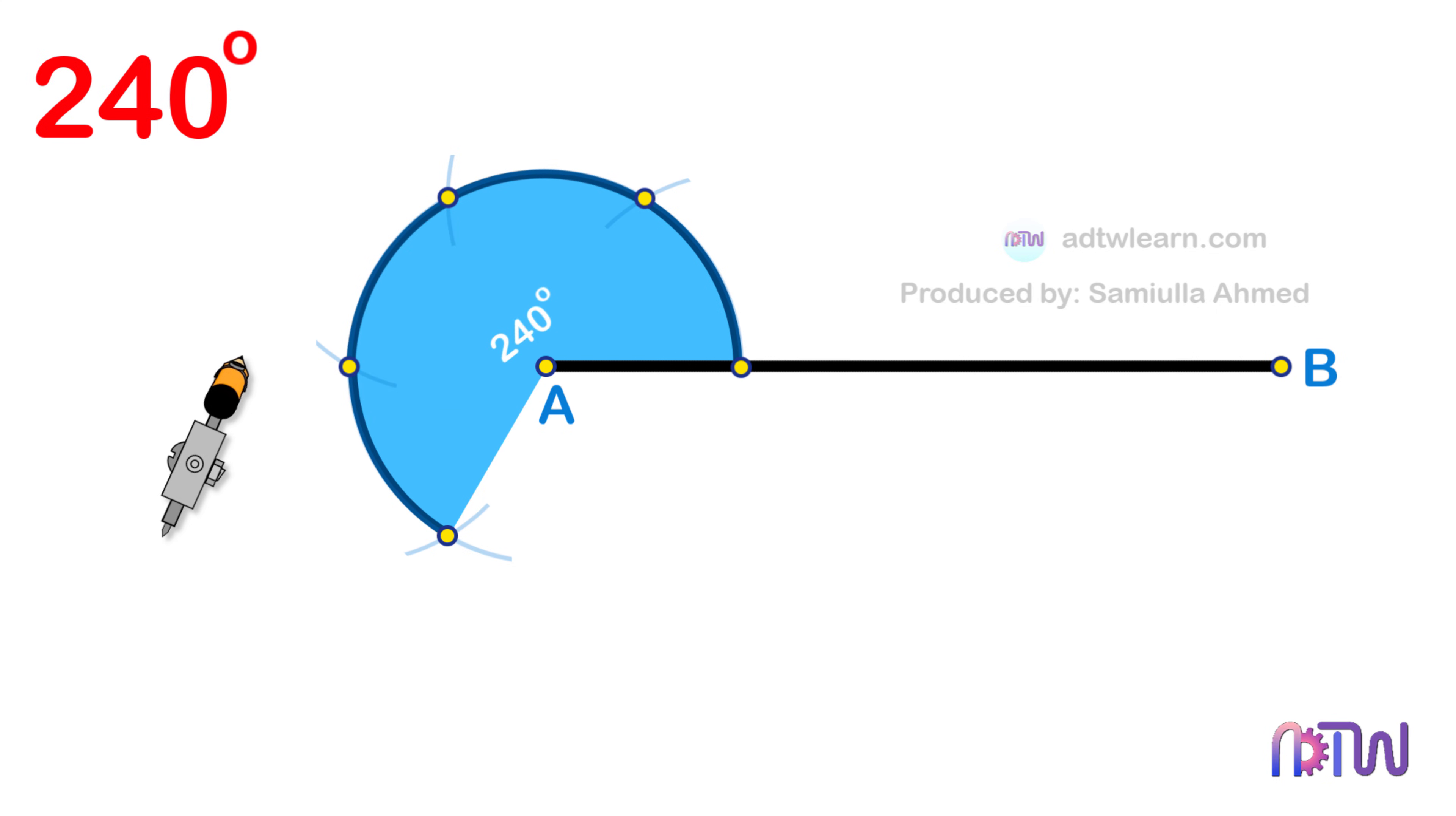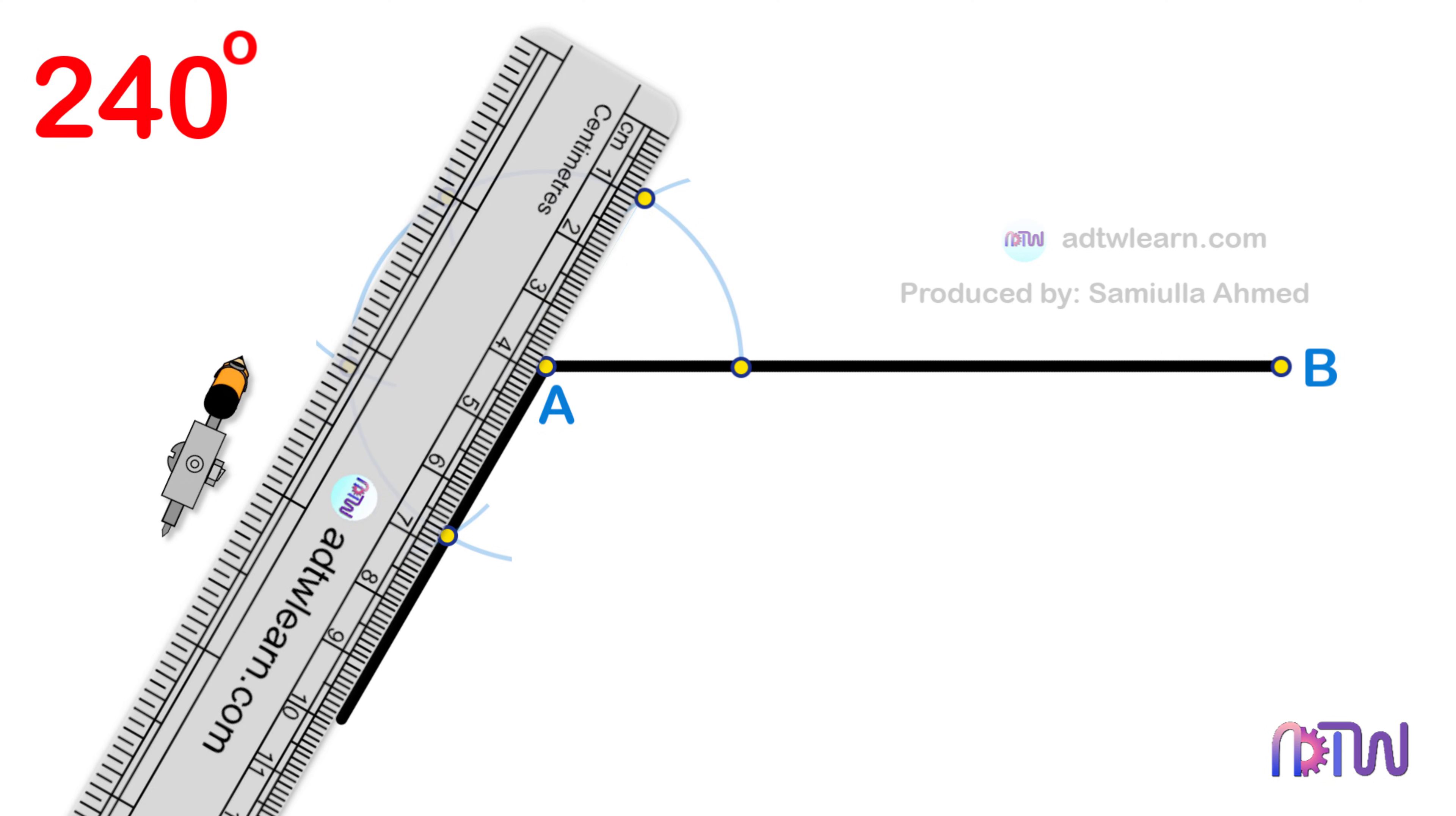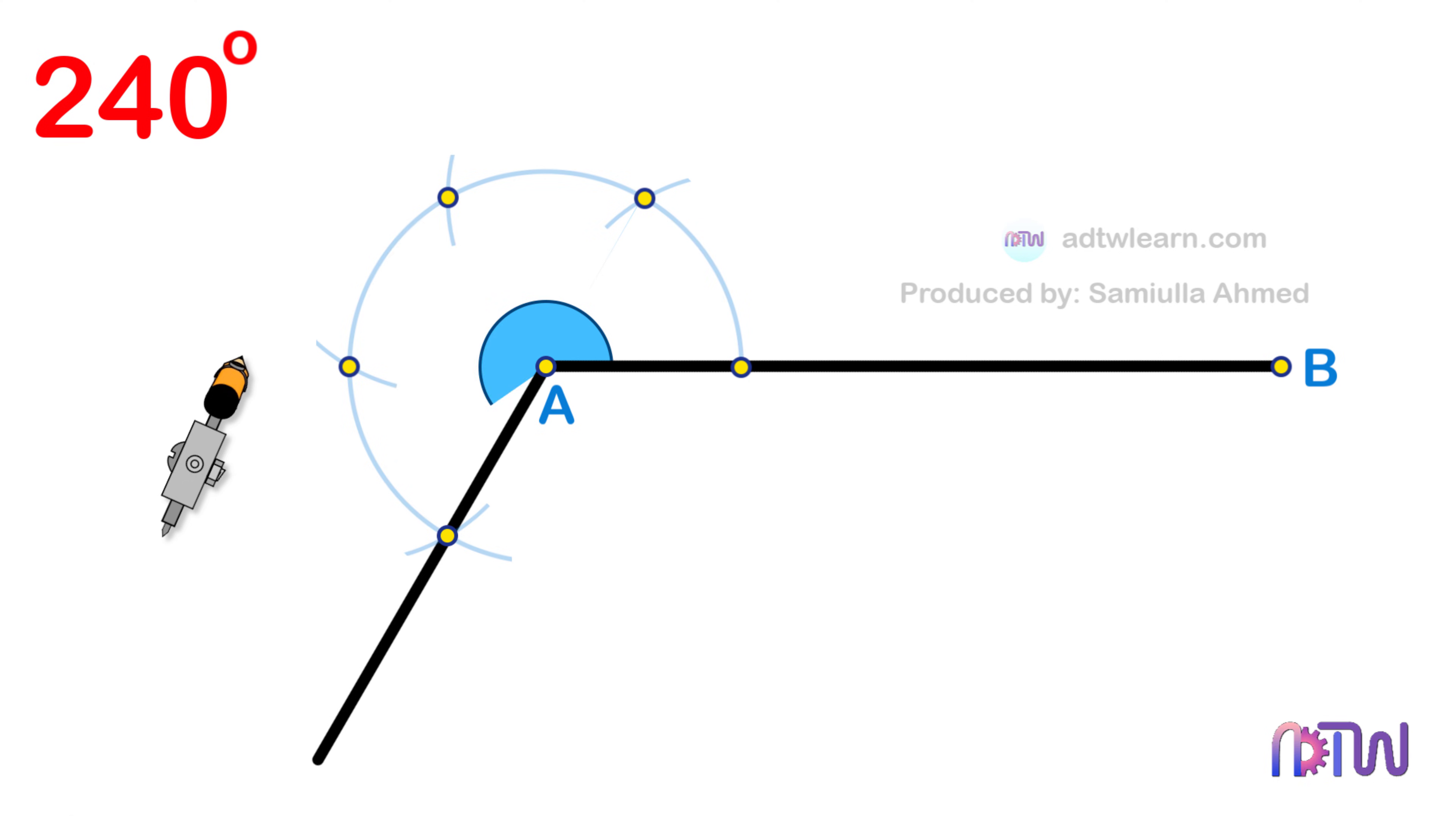Therefore, take a ruler and draw a line passing through this point from the endpoint A of the line. This line will be inclined at the required 240 degree angle.